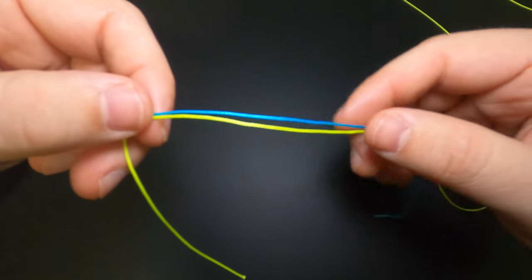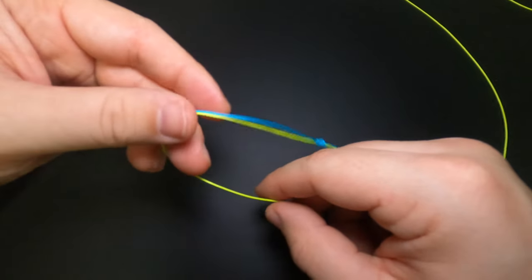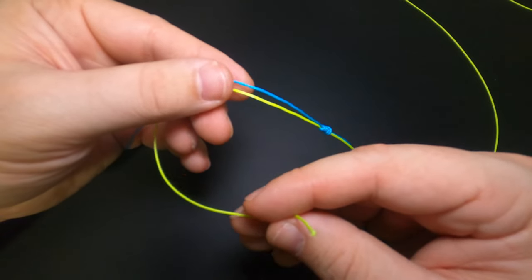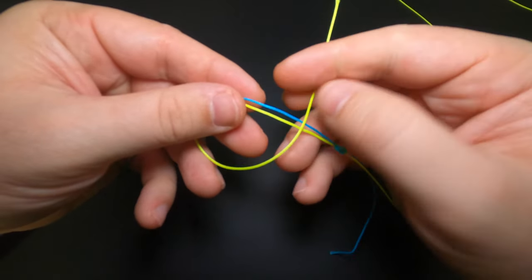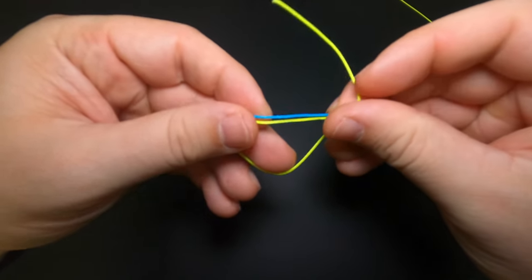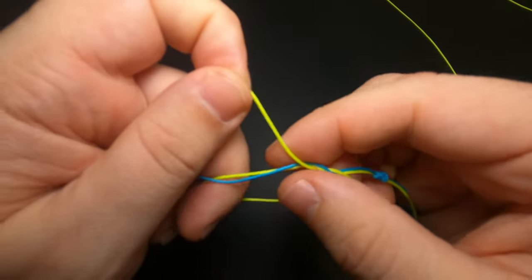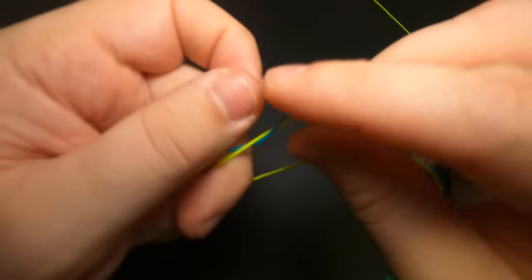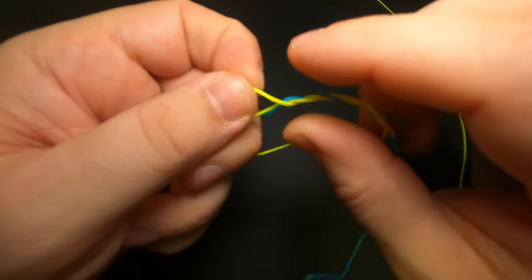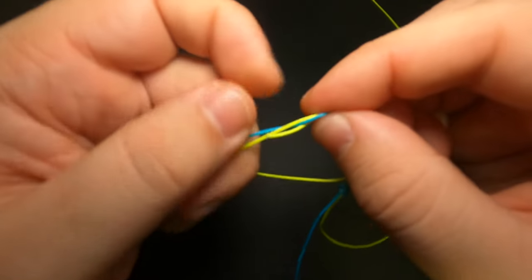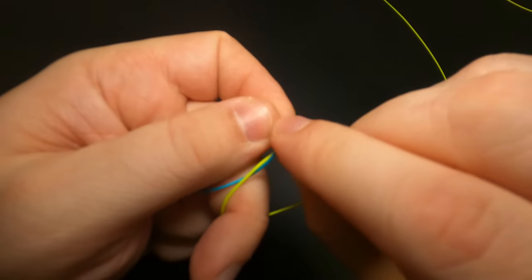And now we're going to essentially repeat the same exact process on the opposite side with the yellow line. So we'll take our mainline now and we'll bring it around forming a loop, pinching across both of those lines. And now we'll go ahead and repeat the same wrapping process with five wraps. We've got one, two, three, four, and five.